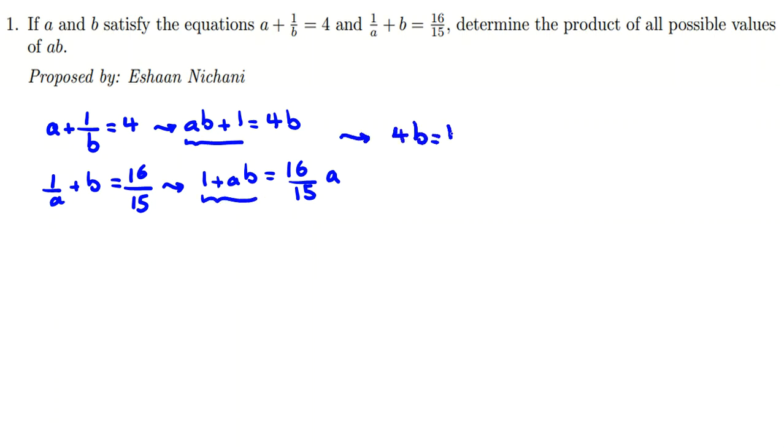4b equals 16 over 15 a. Now if we divide both sides by 4, it will be b equals 4 over 15 a. And if we cross multiply, b times 15, 1 times 4a, it will be equal.